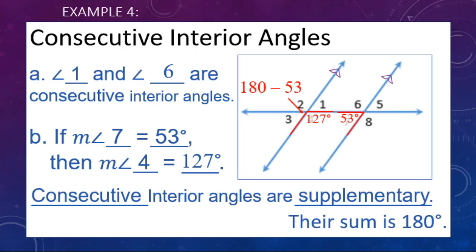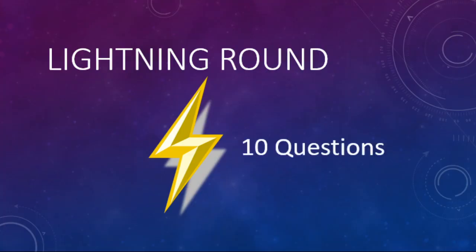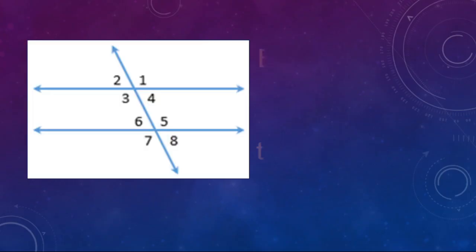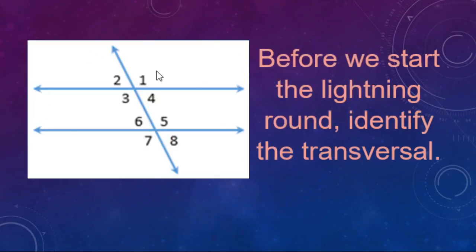Now that we've gone through the four types of angle pairs, it's time for the lightning round — 10 questions, 10 seconds per question. Before we start, we identify the transversal in the diagram — the line that intersects the other two lines — that's the line in red.